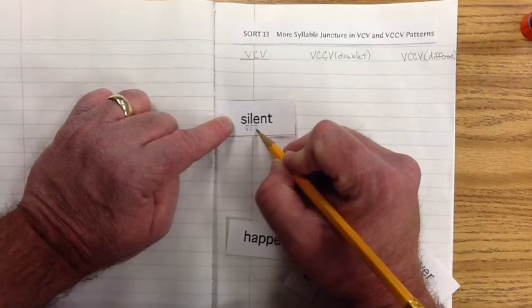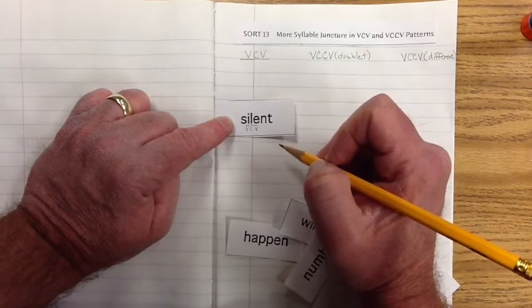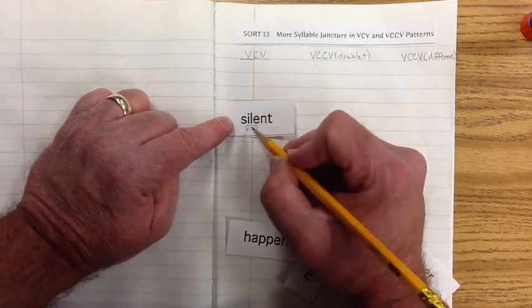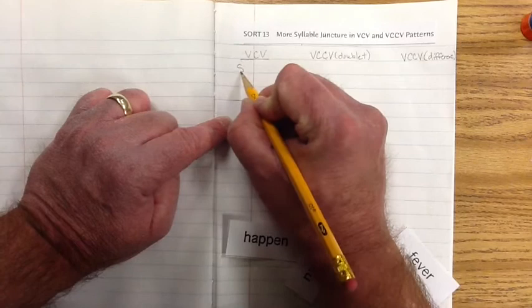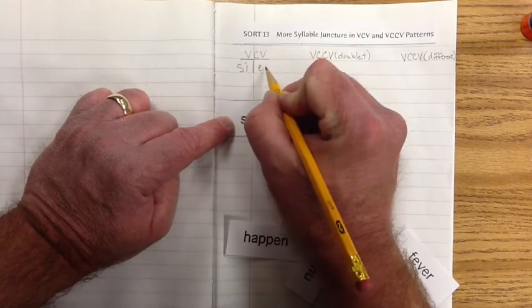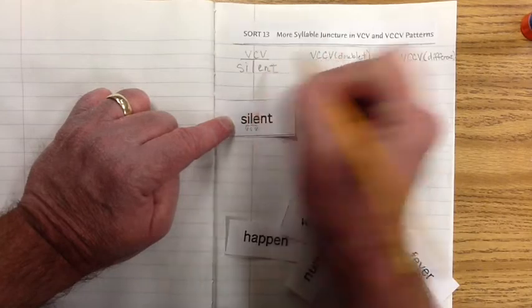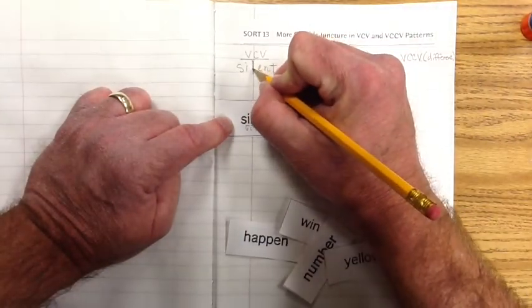So we don't have two consonants together in this word, do we? So this one's going to go under this exemplar. We have the vowel, the consonant, and the vowel. So let's write silent here. S-I, vowel-consonant-L-E-N-T. The word is silent. Kind of quiet, huh?